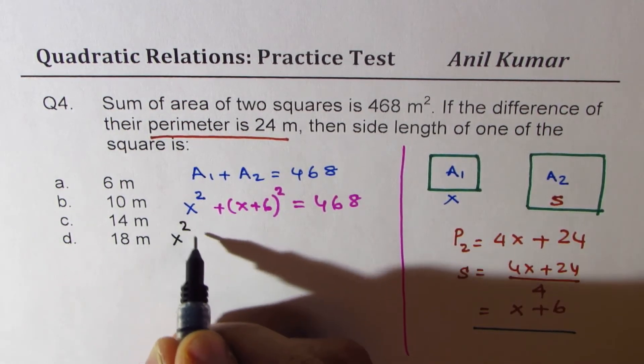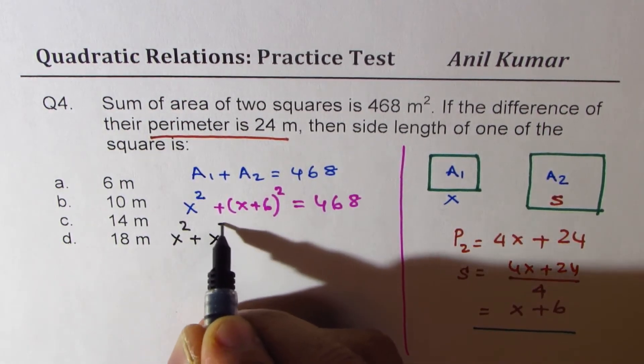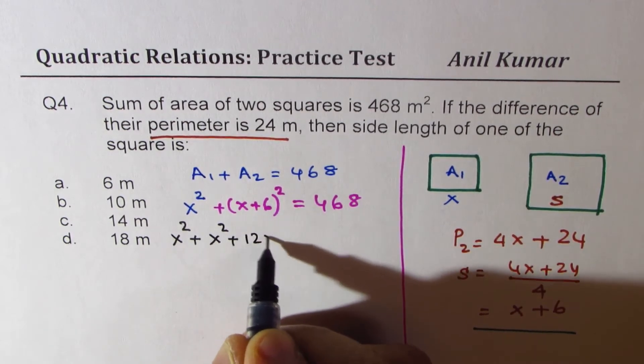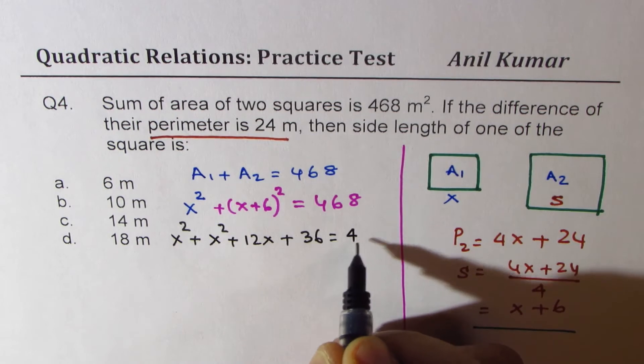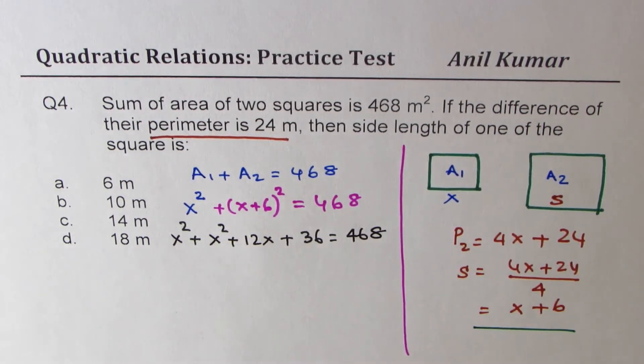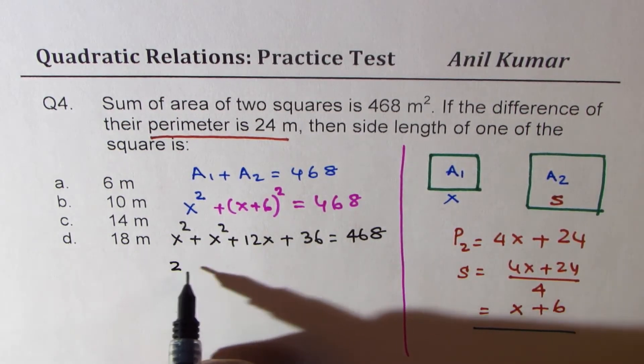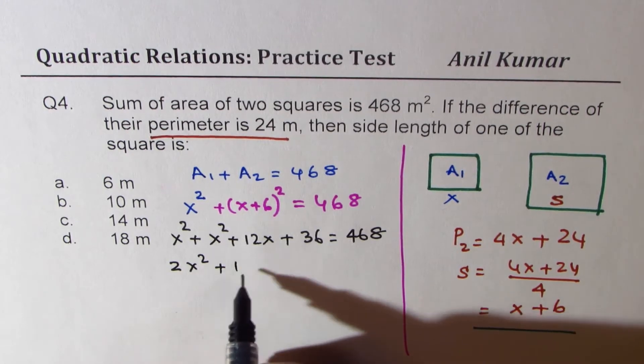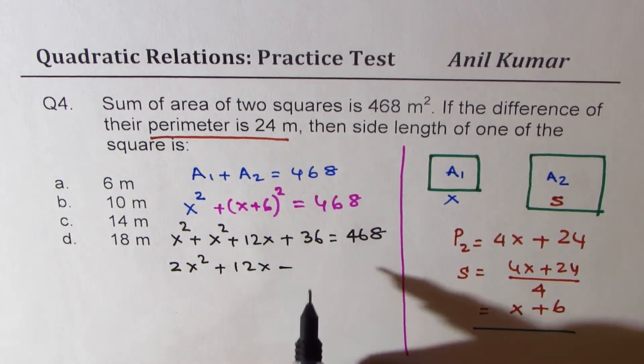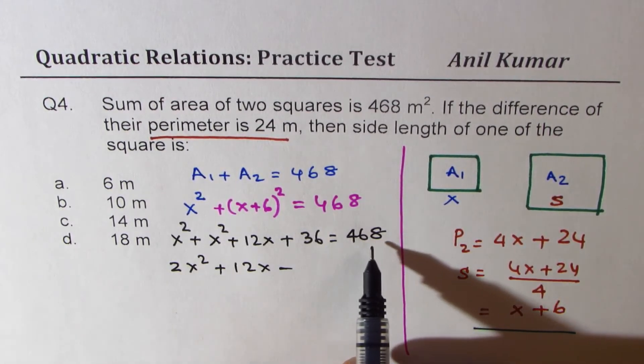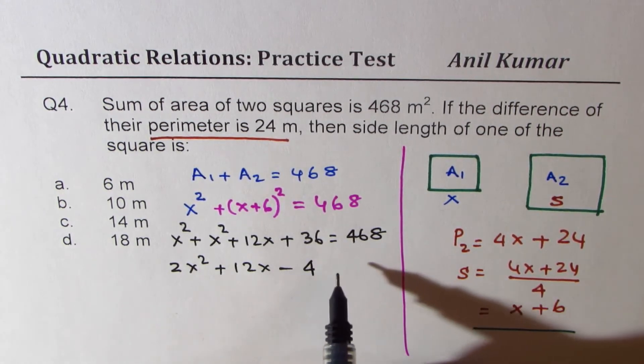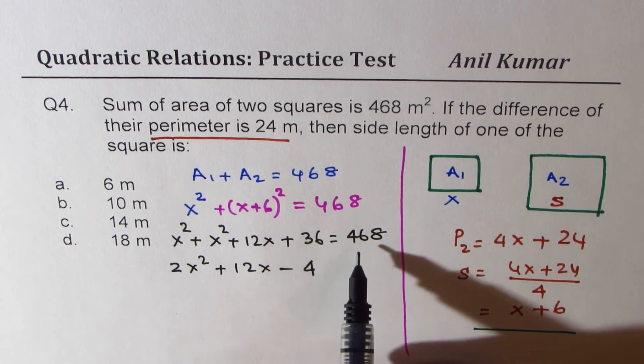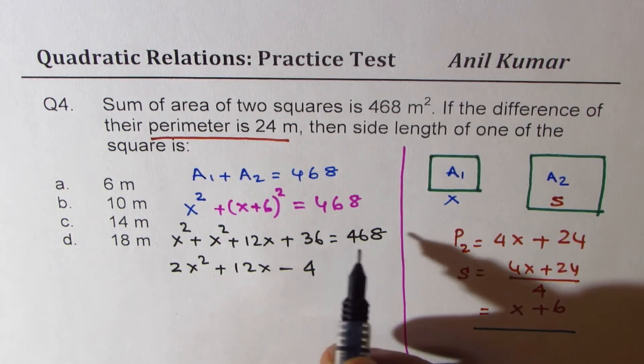So we get x square plus, expand this, x square plus 2ab which is 12x plus 6 square which is 36 equals to 468. Bring all the terms together. So 2x square plus 12x minus, because we will have to take away. So we will take away 36 from here.